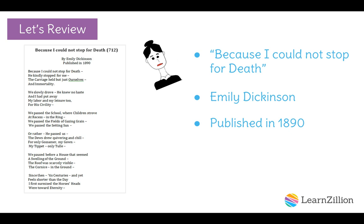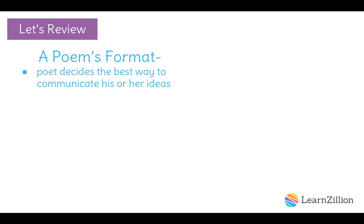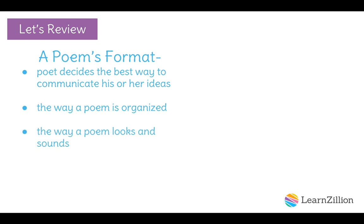We have learned that this poem is not about a literal carriage ride. In the poem, Dickinson's personified character, Death, takes the speaker on a carriage ride from life to death to eternity. When poets sit down to write, they usually start with a big idea they want to communicate to others. Then they must make decisions about the best way to communicate these ideas — including the way a poem is organized, how it will look on the page and sound to the ear, and the subjects and ideas included in the poem.